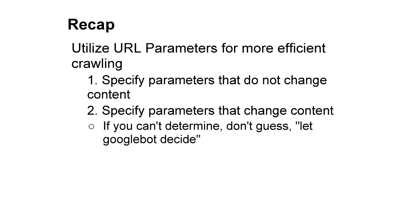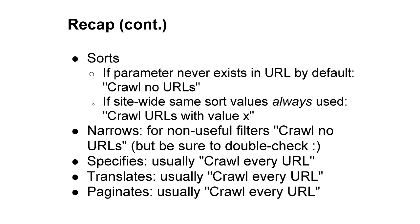To recap: if you're comfortable with URL parameters, start with specifying parameters that don't change page content, then specify parameters that change page content. If you can't determine the right setting, don't guess — let Googlebot decide. For the sort parameter: if it never exists in a URL by default, select 'crawl no URLs'; or if site-wide the same sort value is always used, select 'crawl URLs with value X.' For narrows: if it causes non-useful filtering like size or price, you might select 'crawl no URLs' — just be sure no important pages are affected. For specifies, translates, and paginates, it's usually 'crawl every URL.'